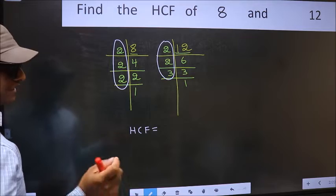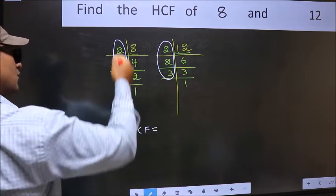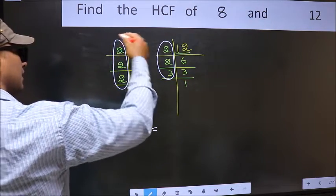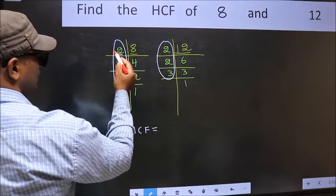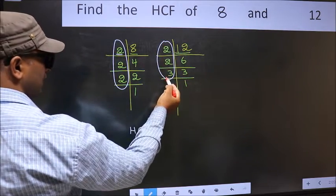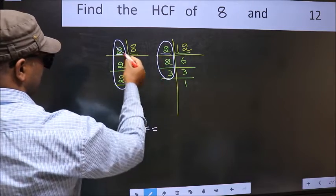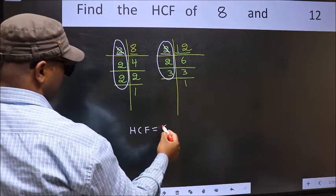So now let us find the numbers which should be present here and also here. Starting with the number 2. Do we have 2 here? Yes. So cut 2 right here.